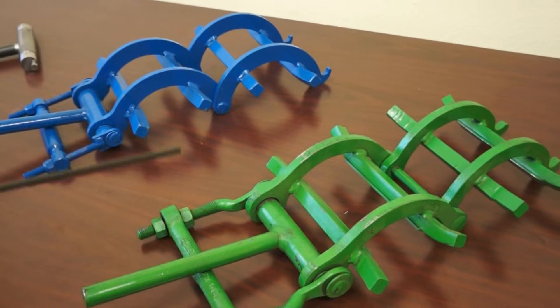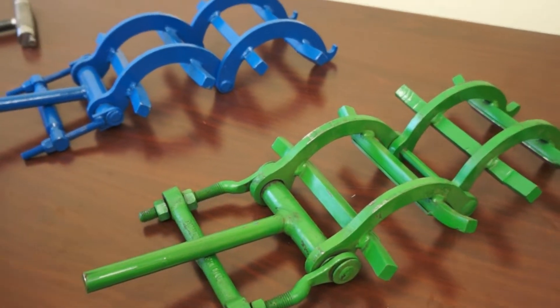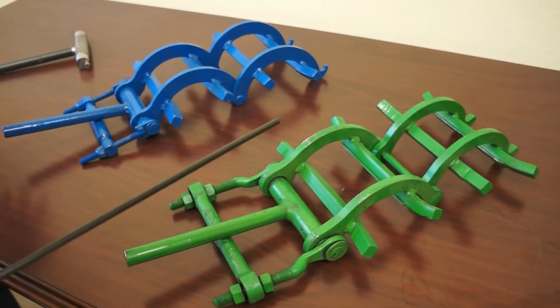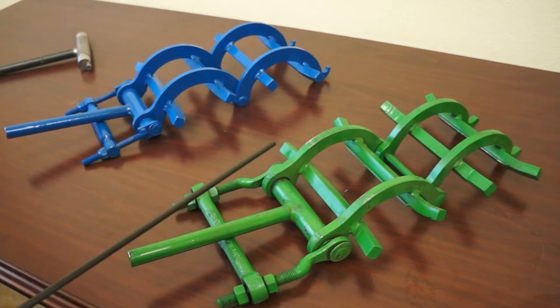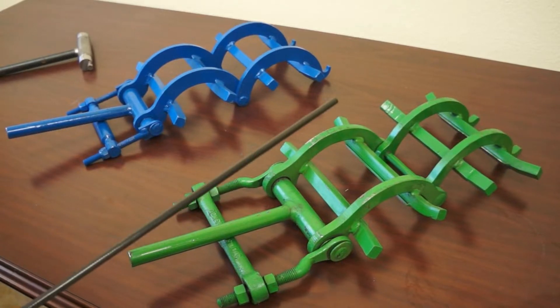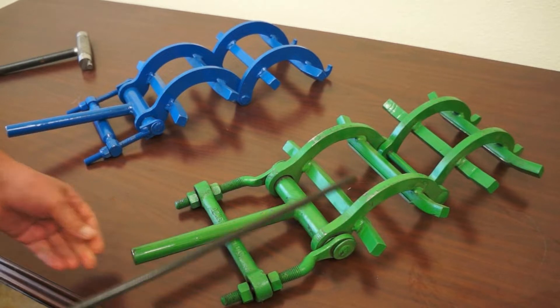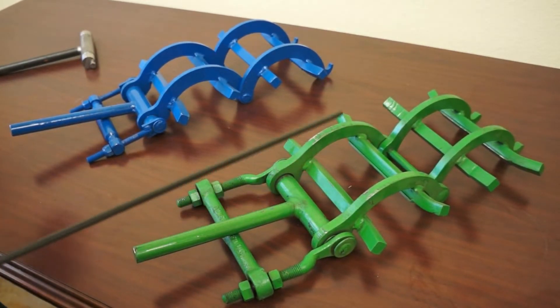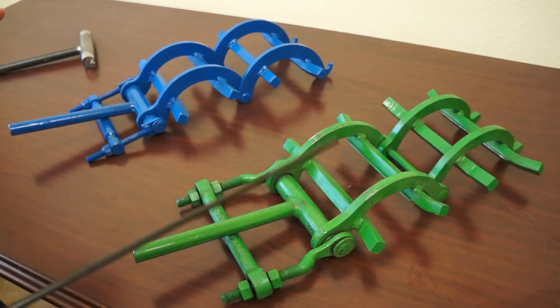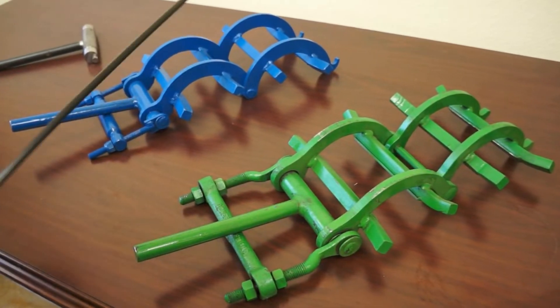Good morning. The purpose of this video is to do a side-by-side comparison of two products. These products are called external pipe alignment clamps and they are a cam-over locking device. We have a blue clamp and a green clamp, and we're going to compare the pros and cons of each clamp.